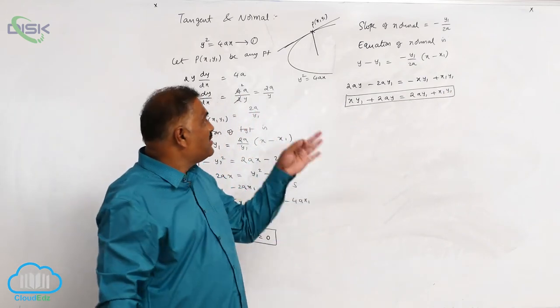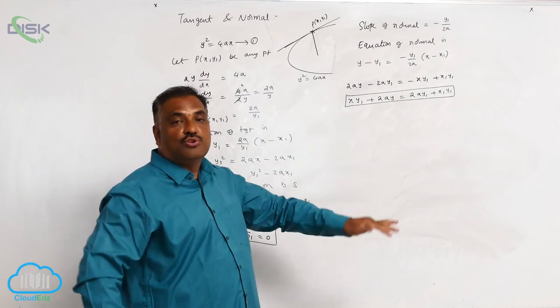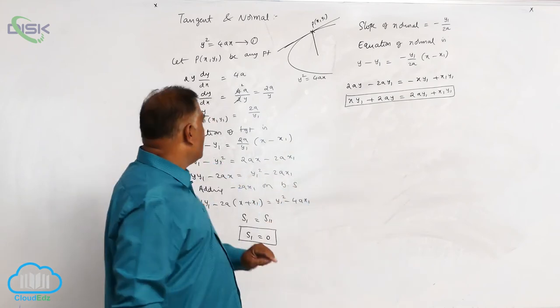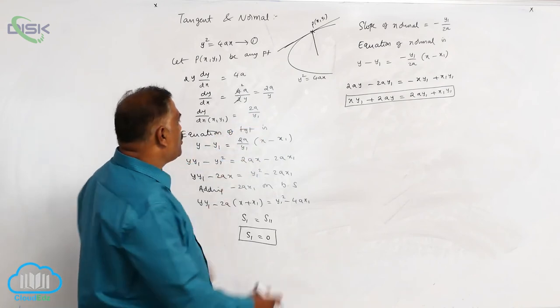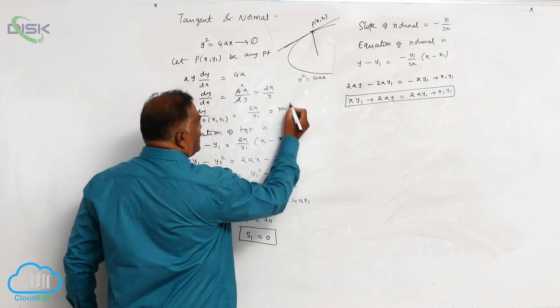The speciality of this question is, let us assume the slope of tangent is given by 2a by y1. Wherever slope is there, you can denote it by m like this.